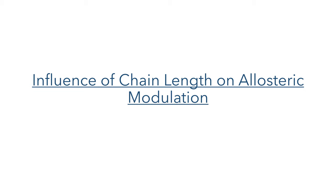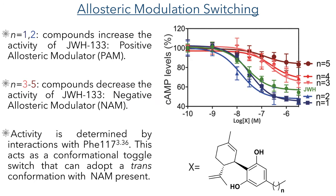To better understand the structure-activity relationship, the researchers synthesized a number of analogues which varied the alkyl chain length on the phenyl ring and assessed their ability to act as allosteric modulators. This experiment showed a very interesting result. When the chain is one or two carbons long, the activity switches and the compound acts as a positive allosteric modulator, increasing the agonist activity of JWH-133. When the alkyl chain contains three to five carbons, the compounds act as negative allosteric modulators and decrease the activity of JWH-133, with the modulation activity proportional to the length of the chain.